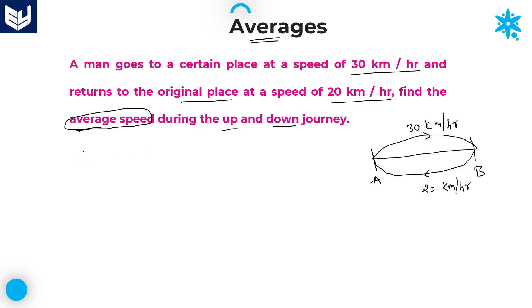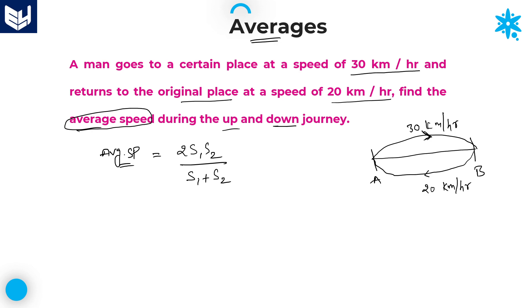Average speed basically depends on two conditions. If at all the distances are equal — in this case, A to B and B to A distances are equal — then average speed is equal to 2·S1·S2 divided by (S1 + S2). I already explained how we get this formula in the introduction video.